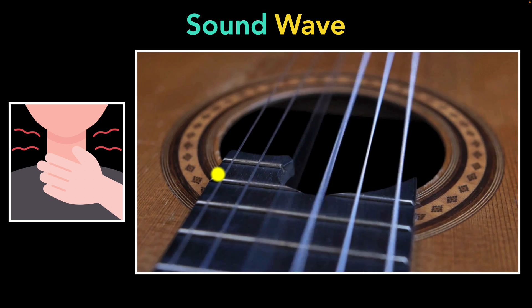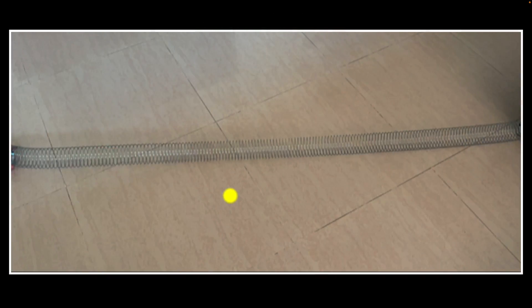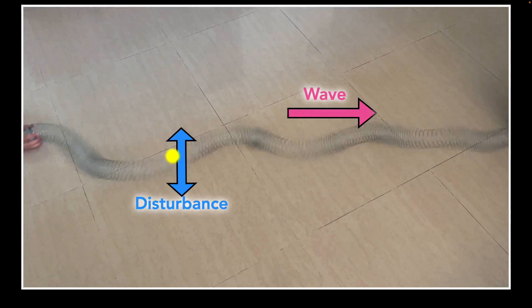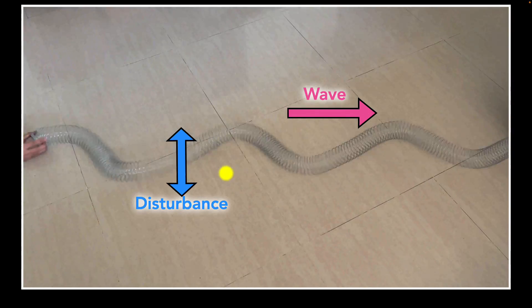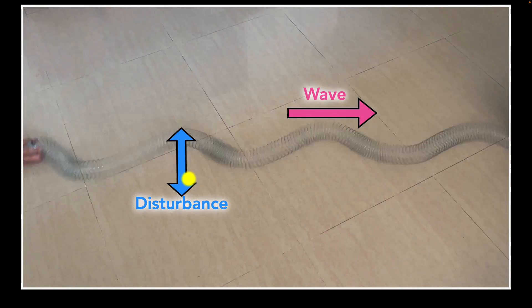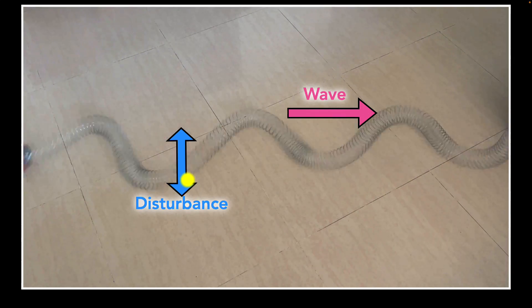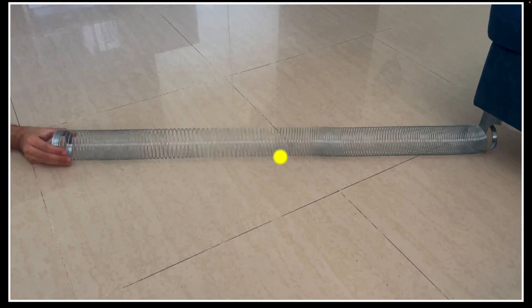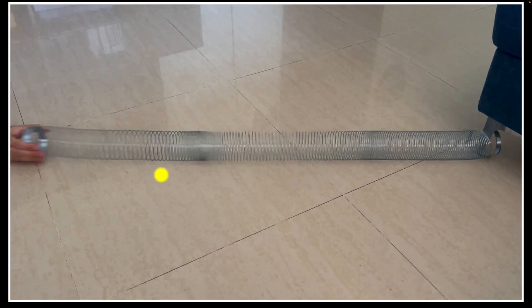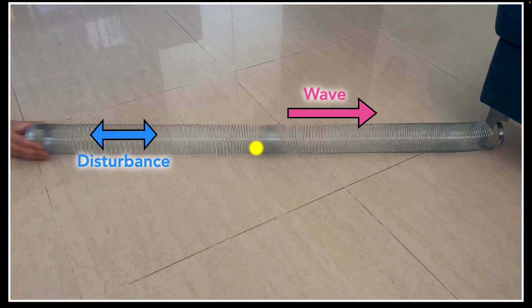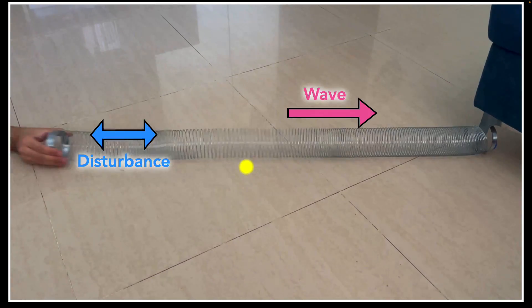But how exactly does sound propagate through a medium? Let's take a slinky to model air particles. There are a couple of ways to disturb a slinky. First, we can disturb it so the disturbance moves up and down, but the wave itself travels to the right — the direction of the disturbance is perpendicular to the direction of the wave. This is NOT how sound travels. In the second demonstration, the slinky vibrates parallel to the direction of the wave — and this is exactly how sound travels.